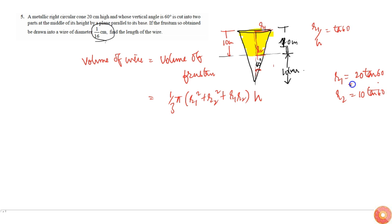Tan(60°) is √3, so this will be 20√3 and this will be 10√3. Volume of wire will be πr² times the length of wire l, because it's a wire, simply cylindrical in shape. So if its length is l, then its volume will be π times small r² times l.